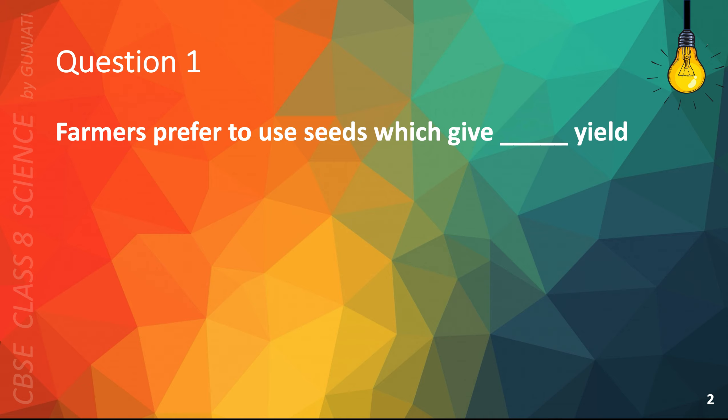Question 1. Farmers prefer to use seeds which give blank yield. A high, B low, C zero, or D all of the above. The correct answer is A high.